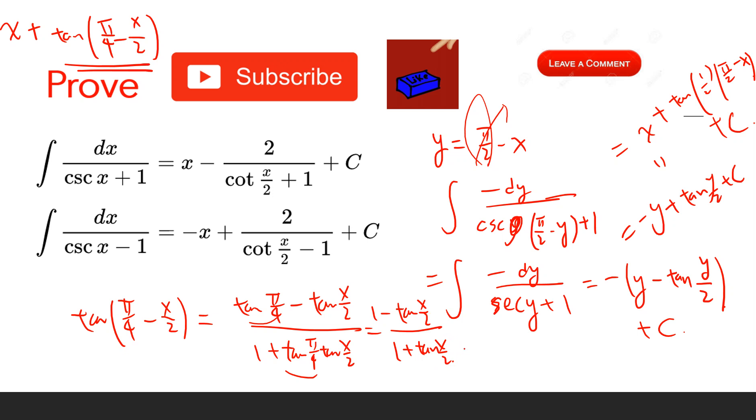And this can be rewritten by dividing by tan(x/2), so you get cot(x/2) plus 1 over cot(x/2) minus 1.